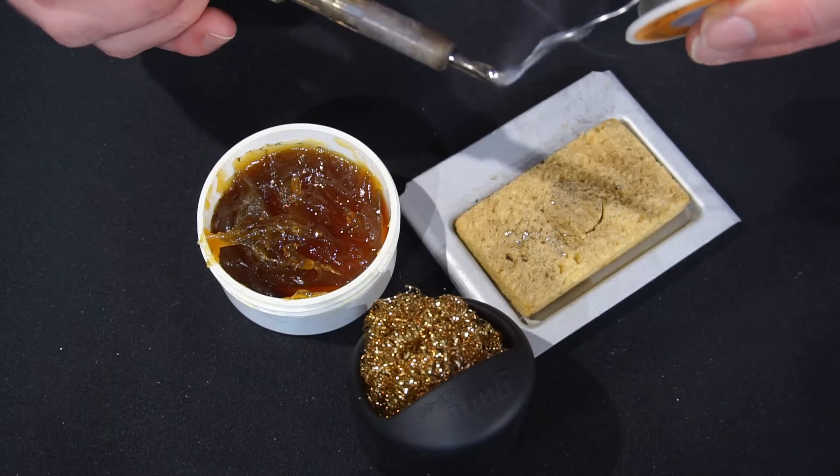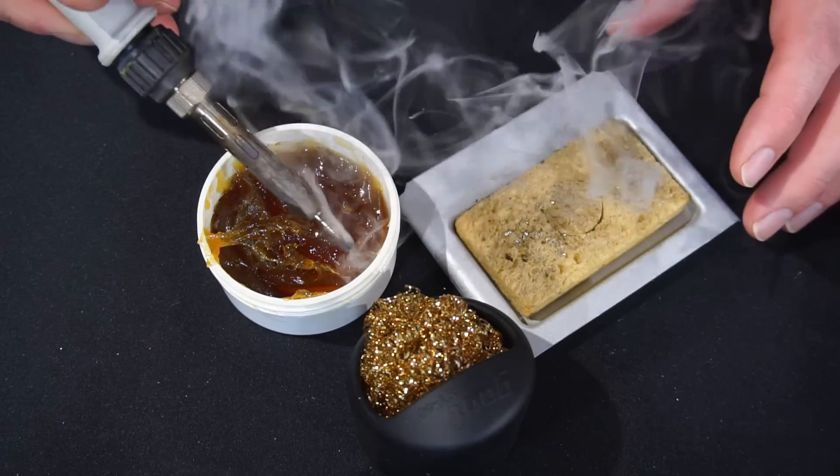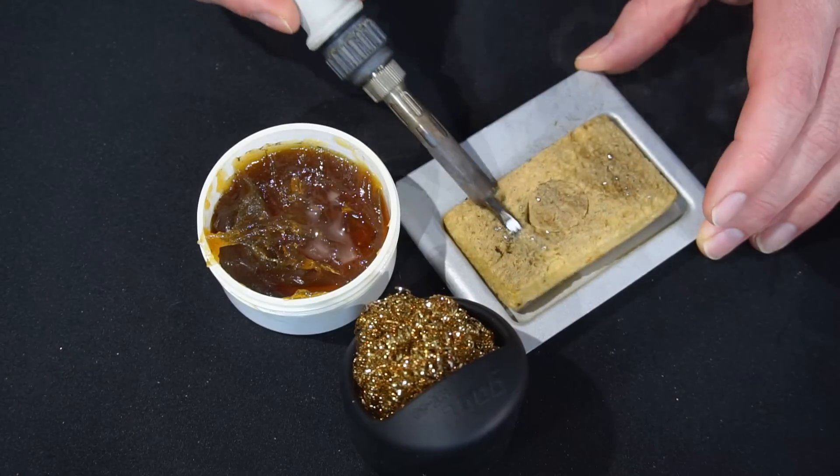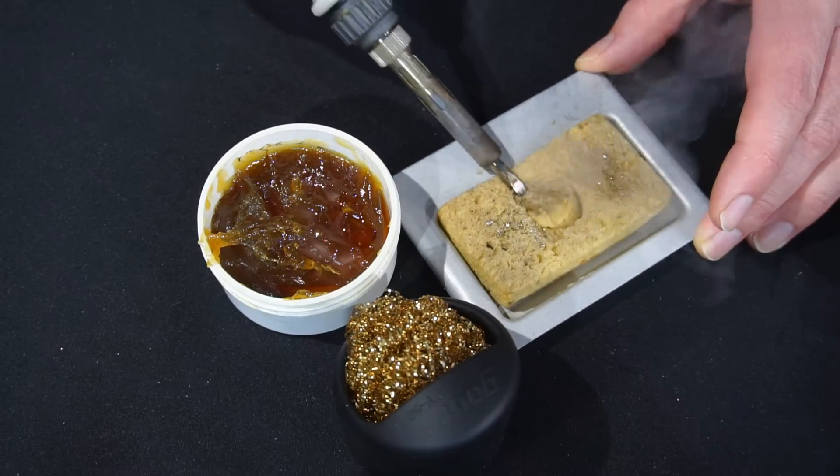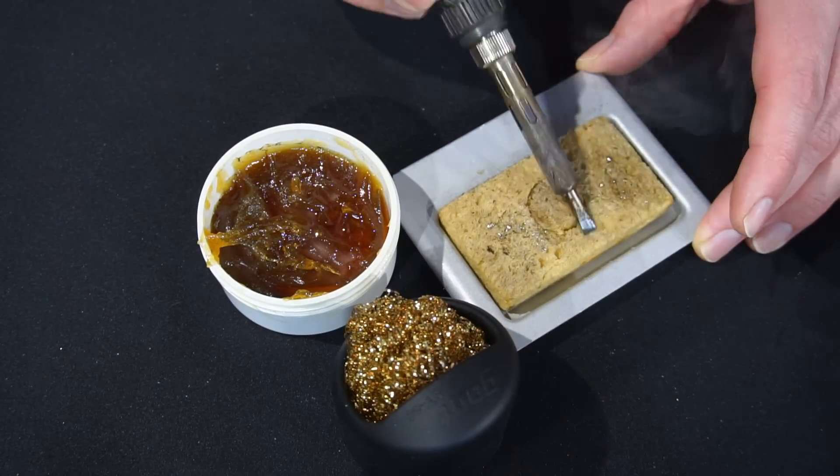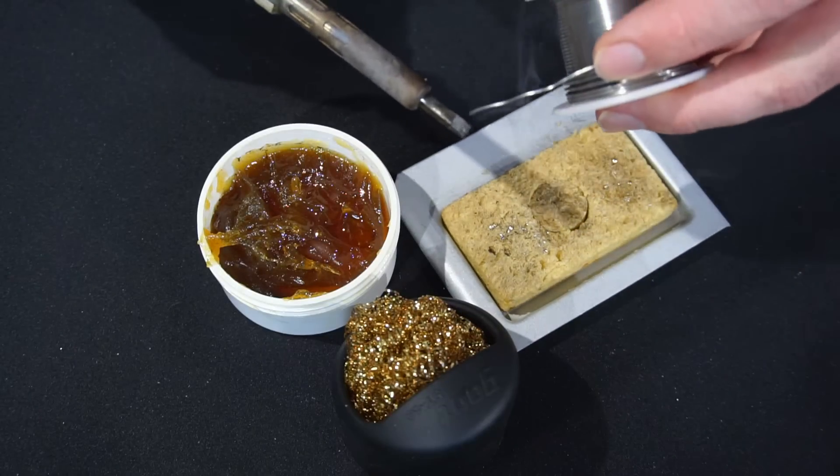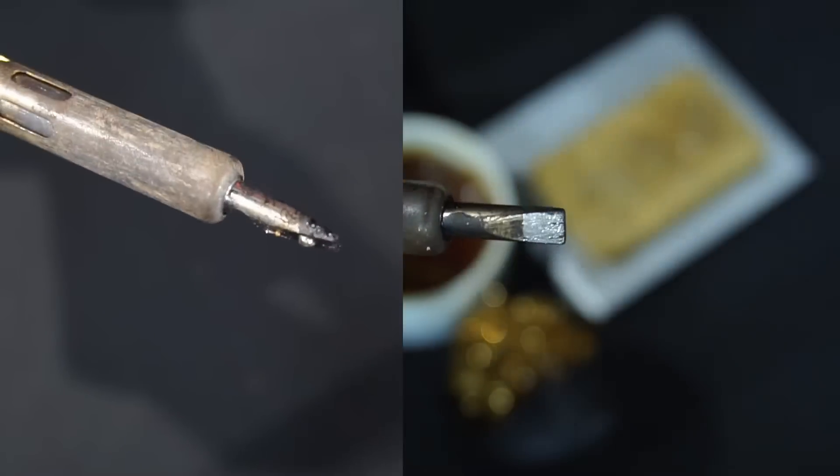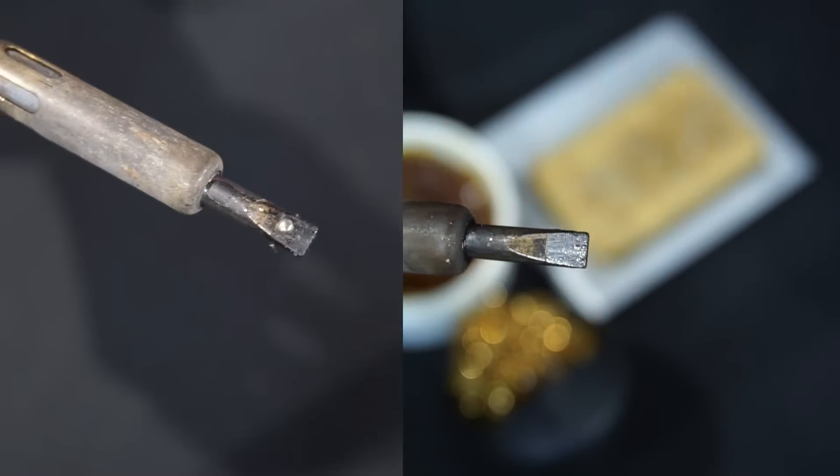First melt some solder on your iron, then dip the iron into the flux. Wipe the iron on a damp sponge or your brass wool, and depending on how dirty your iron is, you may need to repeat this process a few times until your iron looks like this. Just check out those before and after comparisons. Nice.